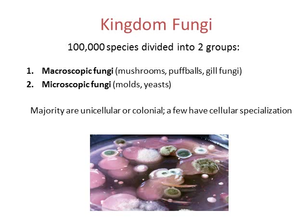We're going to start with the fungi kingdom. There are about 100,000 different species of fungi, divided into two groups. The macroscopic fungi are things we can see with our eyes — mushrooms, puffballs, gill fungi, like the toadstools or mushrooms you get at the grocery store. The other type is microscopic fungi, which we need a microscope to see, including molds and yeast. Most fungi are either unicellular or colonial, and some can have cellular specialization, such as certain cells responsible for reproduction.